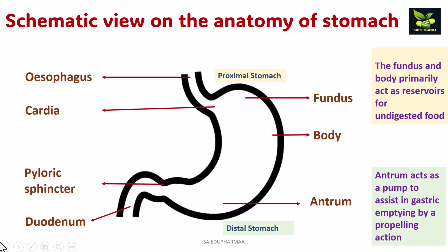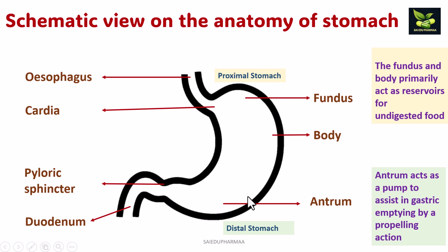Before going ahead, we will discuss a schematic view of the anatomy of the stomach. The stomach is basically divided into two parts: the proximal stomach and the distal stomach. The proximal stomach includes the cardia, fundus, and body, which primarily act as reservoirs for undigested food. The distal stomach includes the pyloric sphincter and antrum, which acts as a pump to assist in gastric emptying by a propelling action.